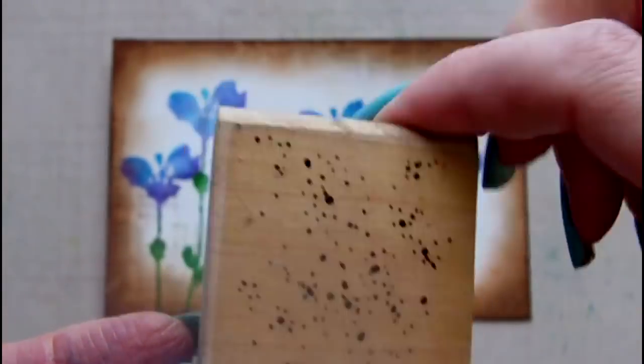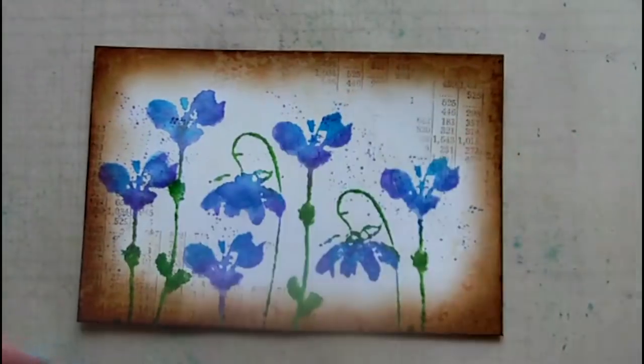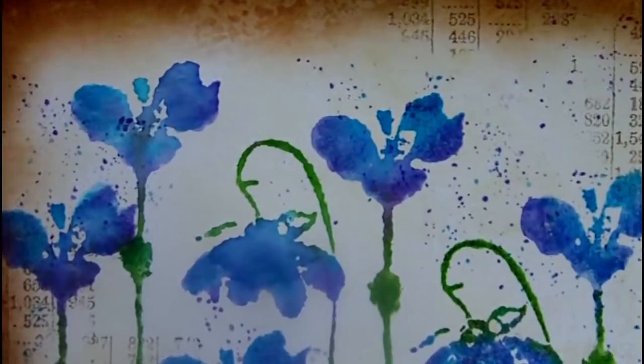To create some movement on the postcard, I've selected my itty bitty background stamp from Stampin' Up. Again, I'm using Distress Inks in Wilted Violet and Salty Ocean.